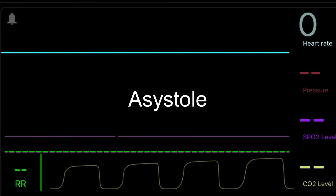You may already recognize this rhythm — it is flat line, or asystole. The AED should not shock this. In fact, nothing really should occur except we need to do good CPR, and maybe we can get that back to ventricular fibrillation and then shock that.